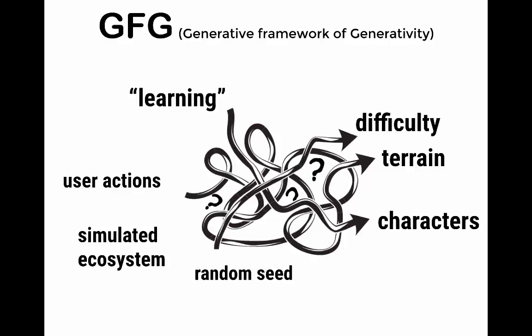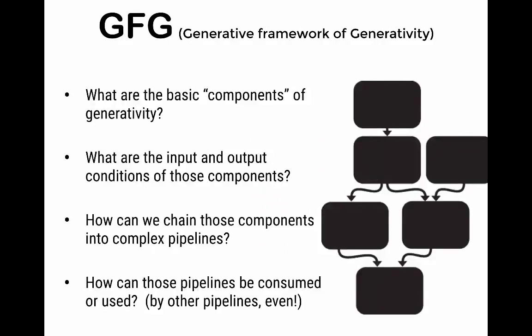If you're looking at procedural content generation games, it's often even more complicated. There's perhaps some sort of machine learning or user actions, a simulated ecosystem or random seed, and you might be generating such diverse things as difficulty or terrain or characters. I wanted to create a generative framework of generativity. That is a framework that I could use to not only think about generativity but construct new examples of generative pipelines.